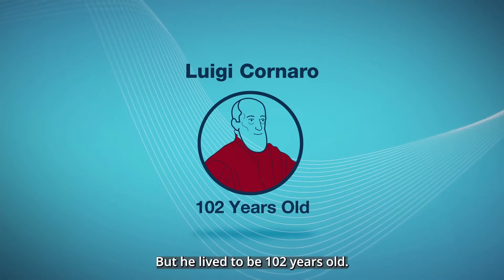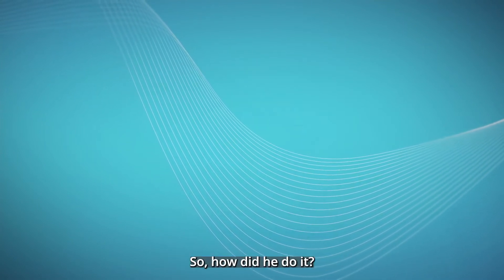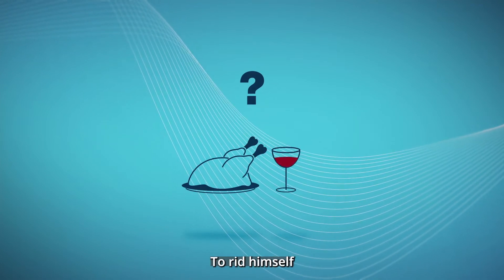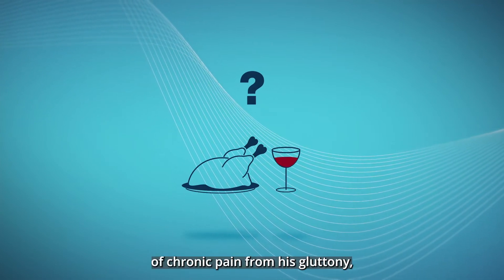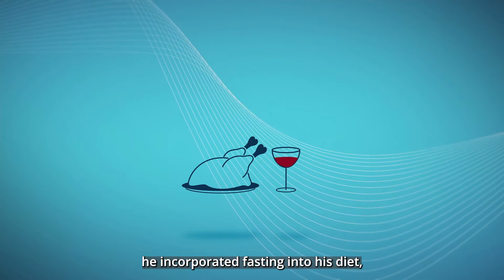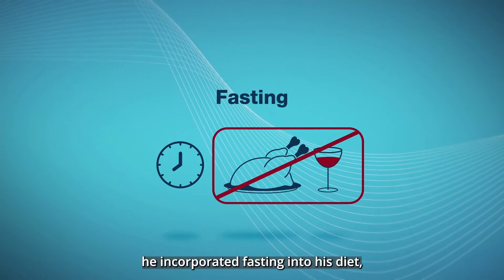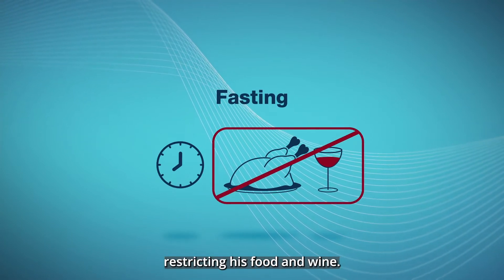but he lived to be 102 years old. So how did he do it? To rid himself of chronic pain from his gluttony, he incorporated fasting into his diet, restricting his food and wine.